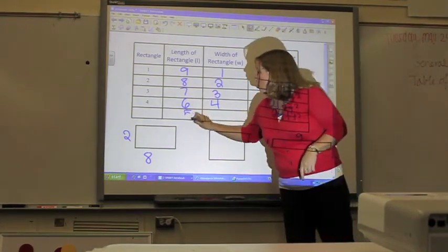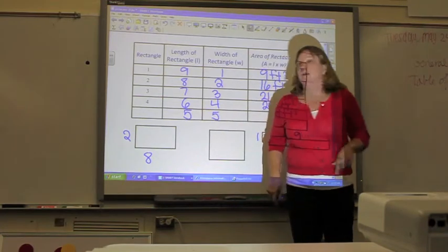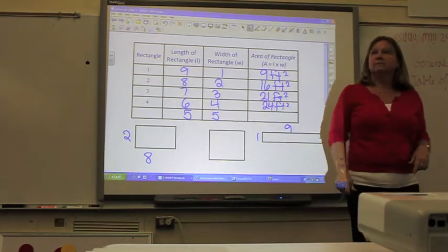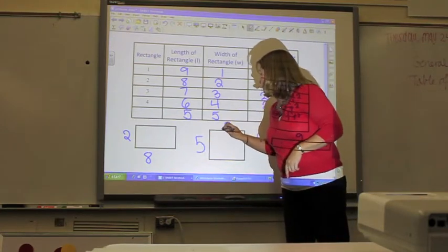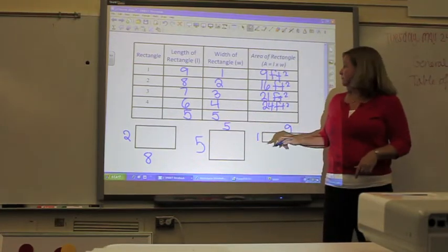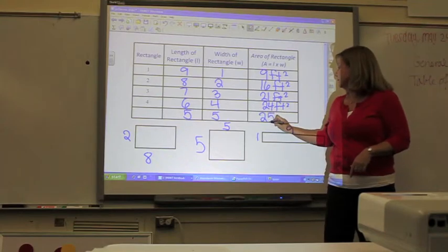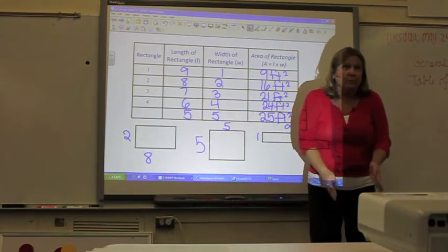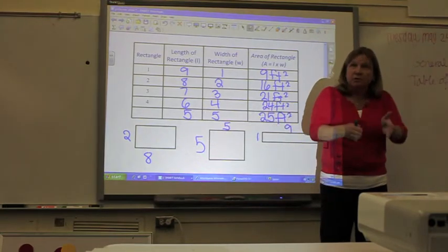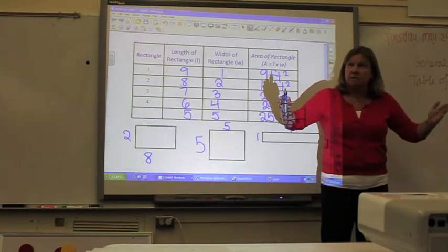5 and 5. What would that look like? A square. And what would the area be? 25. So you did yours in order from long and skinny to less long and skinny until it's square.